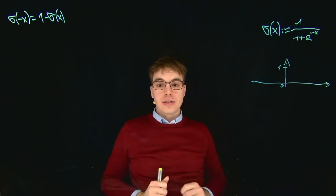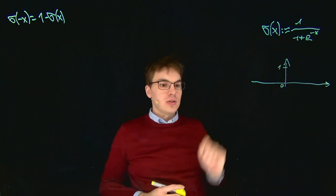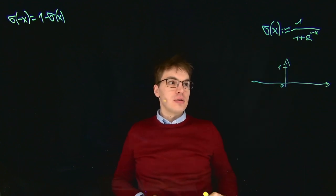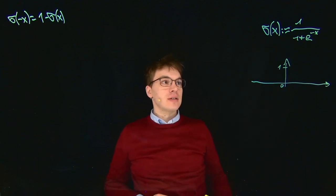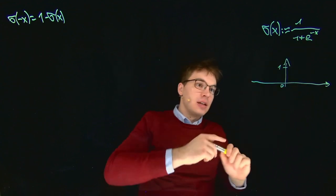Let's have a look at some properties of our sigmoid function. This is the definition: the sigmoid function of X is defined as 1 divided by 1 plus e to the power of minus X.